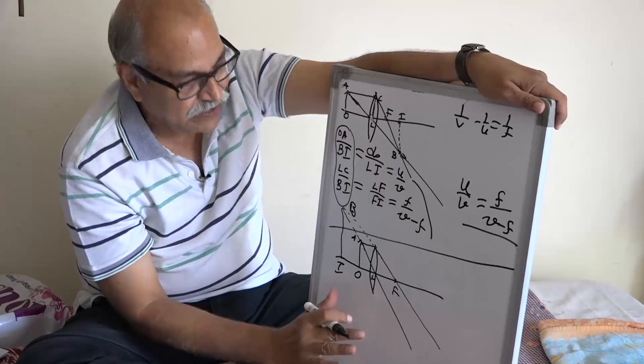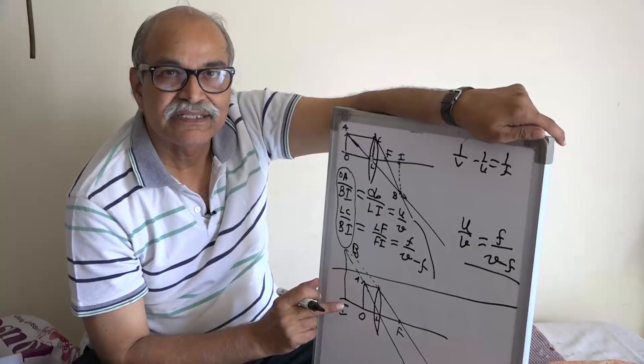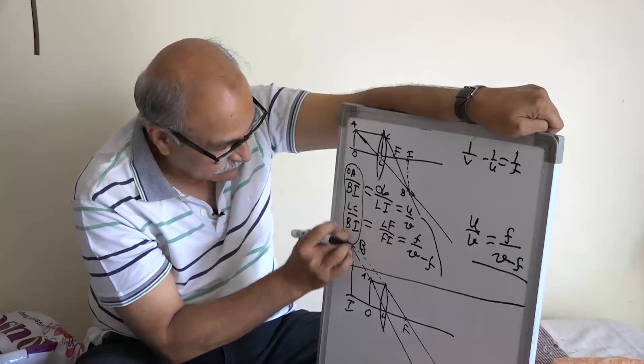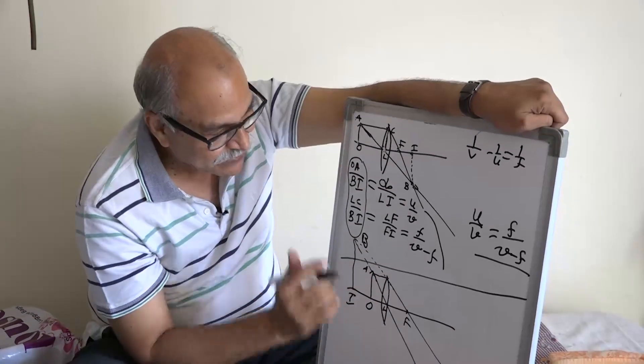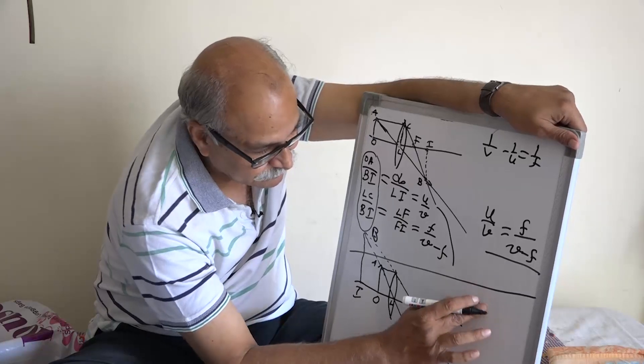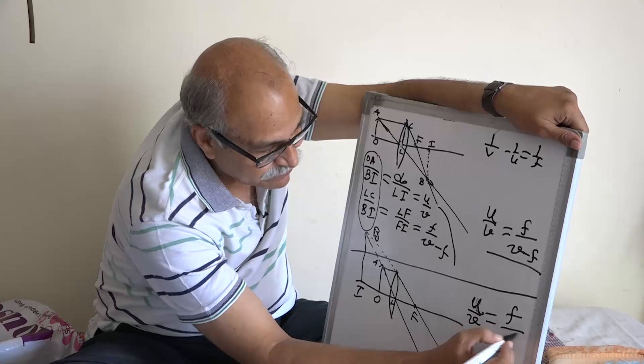Do the same thing. You have two sets of similar triangles and then you do exactly the same thing. In fact, the letters will also be the same and what you will get is U by V is equal to F divided by V plus F.